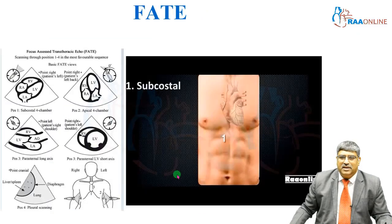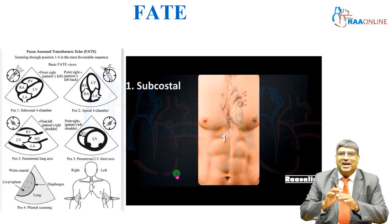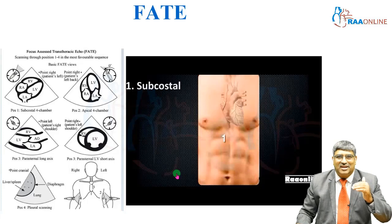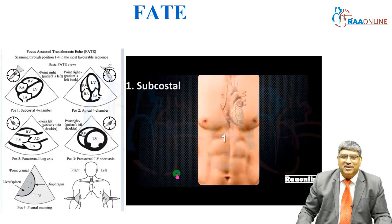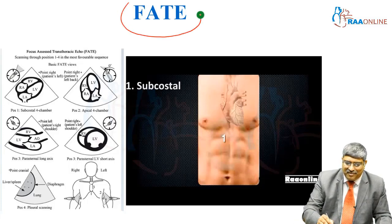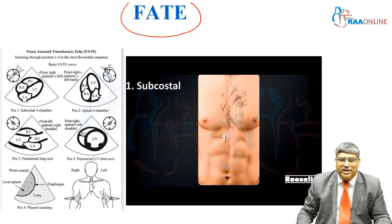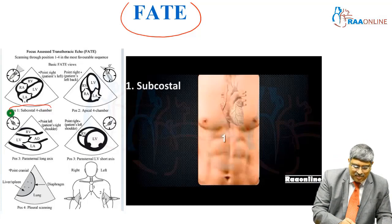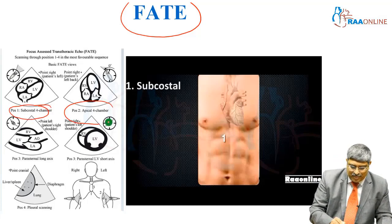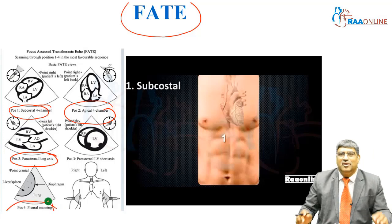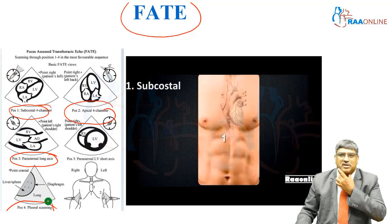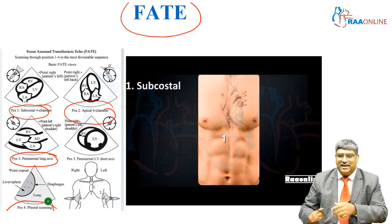Before going to analyze the echo report, we should have the views of various transthoracic echocardiogram. This is called FATE, which is Focused Assessed Transthoracic Echocardiogram. Here you have four primary views: subcostal, apical, parasternal, and pleural scanning. In addition, one more view is the suprasternal view to assess the great vessels.